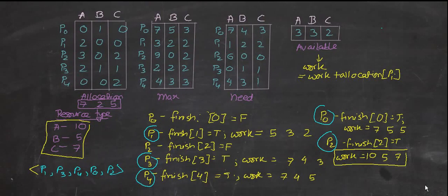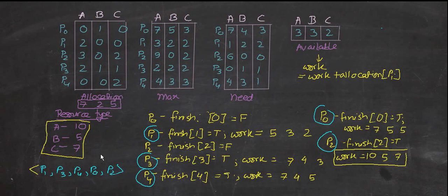Hello everyone, welcome to my channel. Today we're going to be doing a Banker's Algorithm tutorial, which is a deadlock avoidance algorithm used in banks. In the Banker's Algorithm, you are given the allocation matrix, max matrix, and available matrix. You need to find out the need matrix, and also determine if the system is in a safe state. When it's in a safe state, it means a deadlock won't occur.